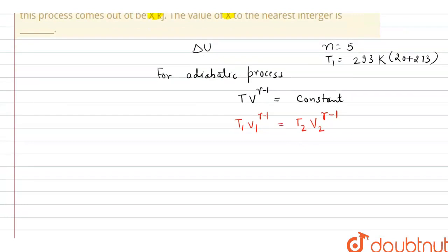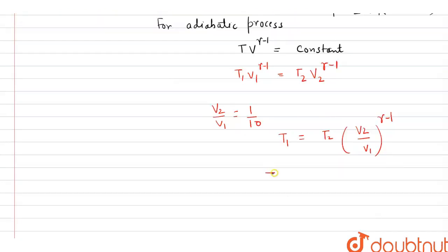It is given that the volume becomes one-tenth of its original volume, so V2/V1 = 1/10. From the adiabatic relation, T1 = T2 · (V2/V1)^(γ-1), which gives T1 = T2 · (1/10)^(7/5 - 1) = T2 · (1/10)^(2/5).